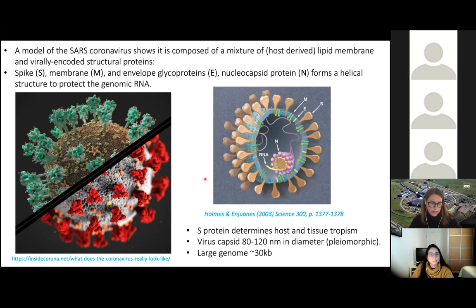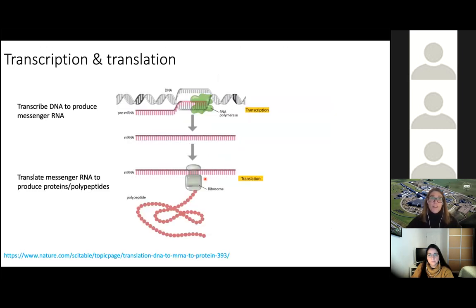Inside the capsid, the virus packages quite a large genome — 30 kilobases, which is a lot. Human hepatitis virus has a genome ten times smaller, and HIV has about 9 kilobases. Coronaviruses have one of the largest viral genomes. To understand how the virus uses this genomic material, I need to briefly explain how we go from DNA to proteins — the canonical process of transcription and translation in eukaryotes.